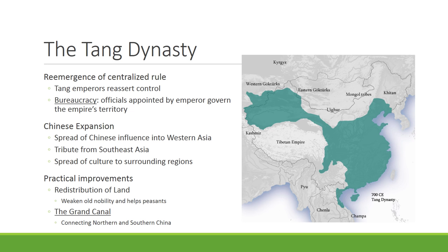The Tang expanded into Central Asia — you can see that blob sticking out to the left on the map. They also expanded south into Southeast Asia, forcing states there to pay tribute to the Chinese Empire. Chinese culture, Chinese writing, and Chinese philosophies began to spread all over Asia, down into Southeast Asia, and very importantly into Japan and Korea.